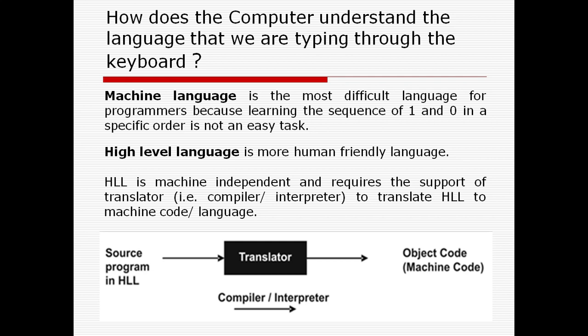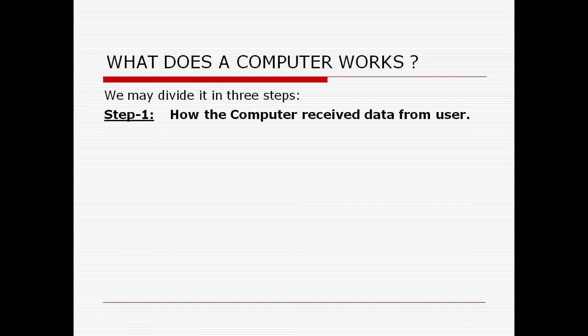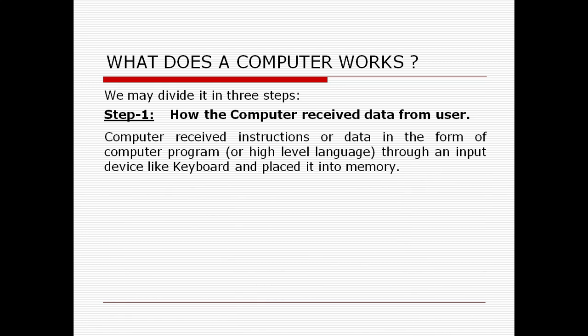Let's move to the point: how does a computer work? We may divide it into three steps. Step one: how the computer receives data. The computer receives instructions or data in the form of computer programs or high-level language through an input device like keyboard and places it into the memory.